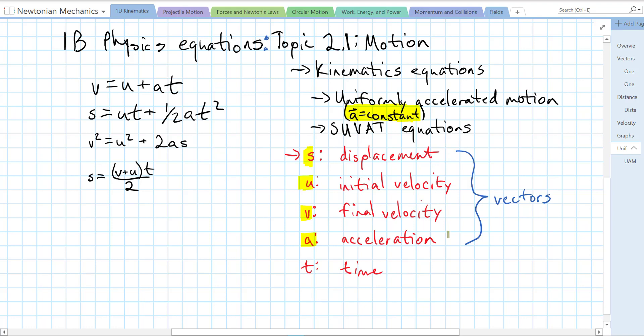Notice that these first four variables are all vectors, which means we're going to have to worry about the sign of the vector. Usually we use the standard Cartesian coordinate system. We say up is positive y, to the right is positive x, which means down is negative y and to the left is negative x.